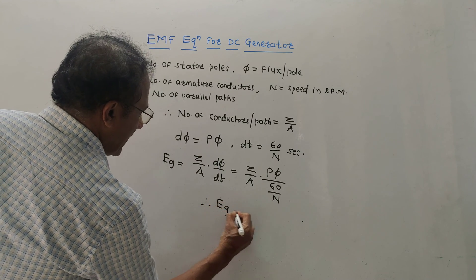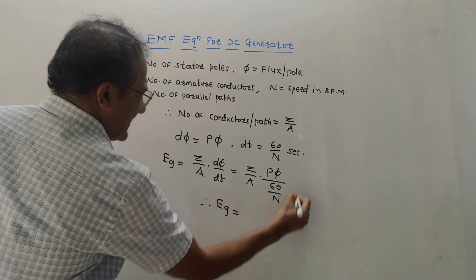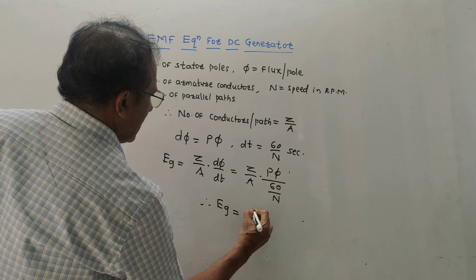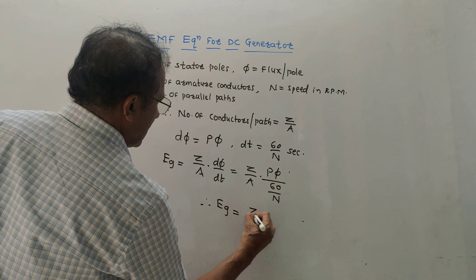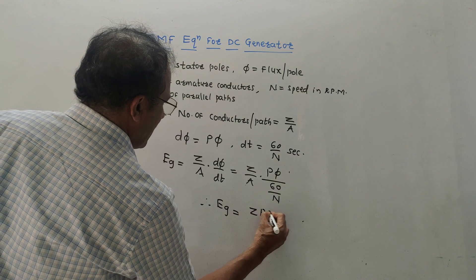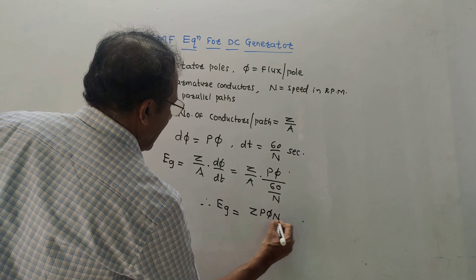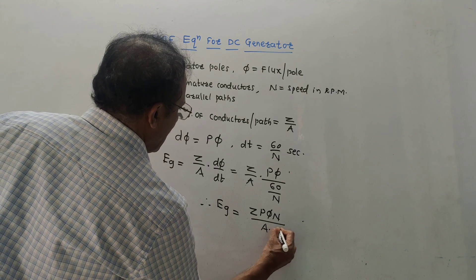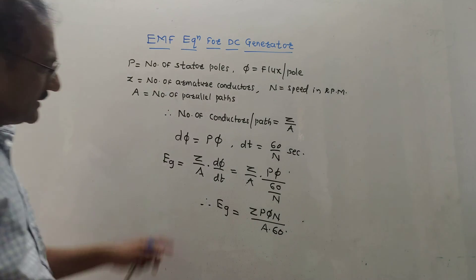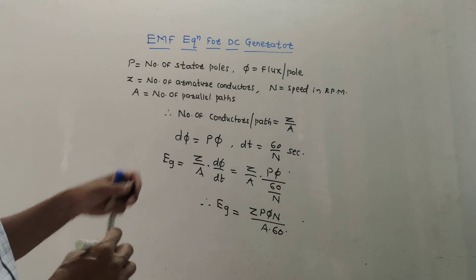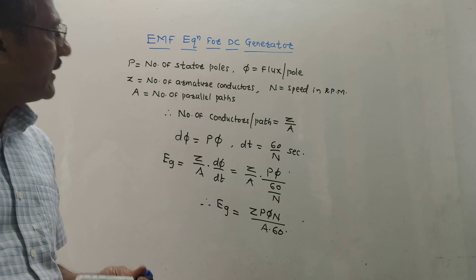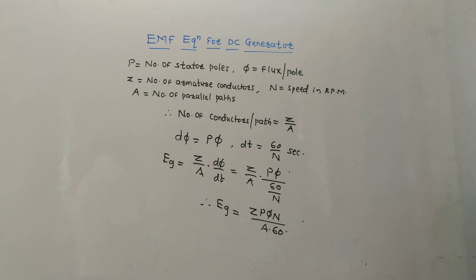According to Faraday's law, the induced EMF is given by Z/A into dφ/dt. Putting the values — dφ = Pφ and dt = 60/N — the final EMF equation is E = ZPφN / (60A). This is the formula to calculate EMF of a DC generator.